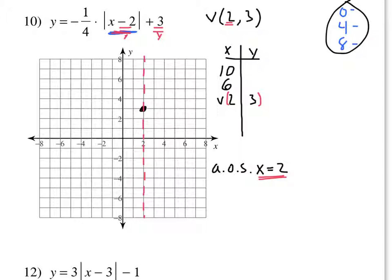To the left of our vertex, I want to plug in negative 2, because negative 2 minus 2 is negative 4, which is divisible by 4. I want to plug in negative 6, because negative 6 minus 2 is negative 8, which is also divisible by 4. If you want to plot points, it'll work, but it's not the quickest way. Give yourself a chance by getting easier numbers to graph. You want the stuff inside the absolute value to be divisible by 4 because we're multiplying by 1 fourth.